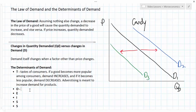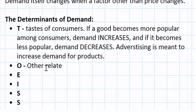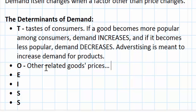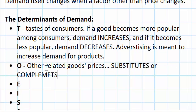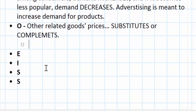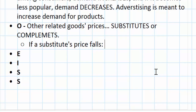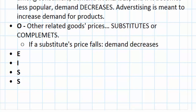The O in our acronym stands for other related goods prices. This could refer to substitutes or complements. A substitute is a good that could be consumed instead of the good in question. So what happens if a substitute's price falls? If a good that you could consume instead of your favorite candy got cheaper, you would consume less of your favorite candy at every price. So if a substitute's price falls, demand decreases for the good in question.